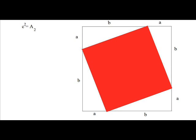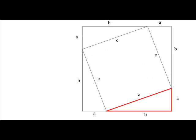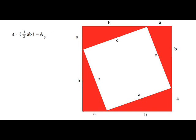A2 does not equal A1 — the area of the interior square is obviously not the same as the area of the exterior square because it's smaller by a factor of these four triangles that surround it. We know that the area of a triangle is equal to one half the base times the height, so the area of one of these triangles would be one half A times B. To get the area that surrounds the interior square, we simply multiply this by four.